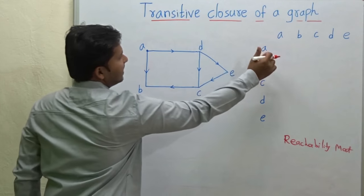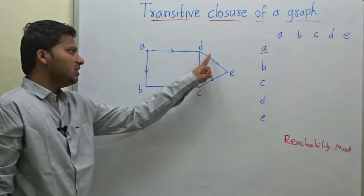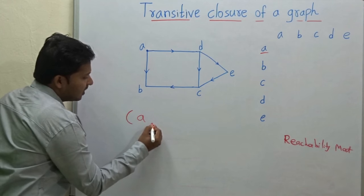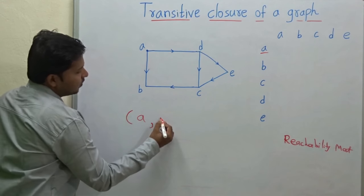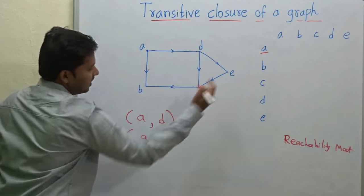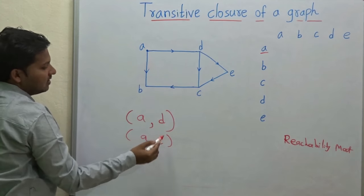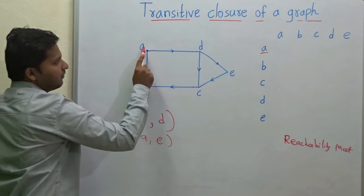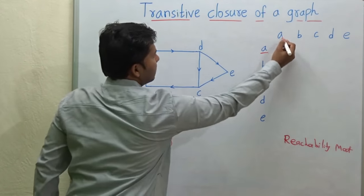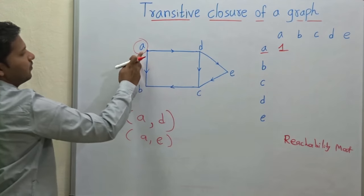So see here, this is vertex A. What are the vertices that can be reached from vertex A? Means there is a path from vertex A to vertex B or there is a path from vertex A to vertex E. That means vertex D and E can be reached from vertex A. For vertex A, obviously it can reach itself, so the value is 1.